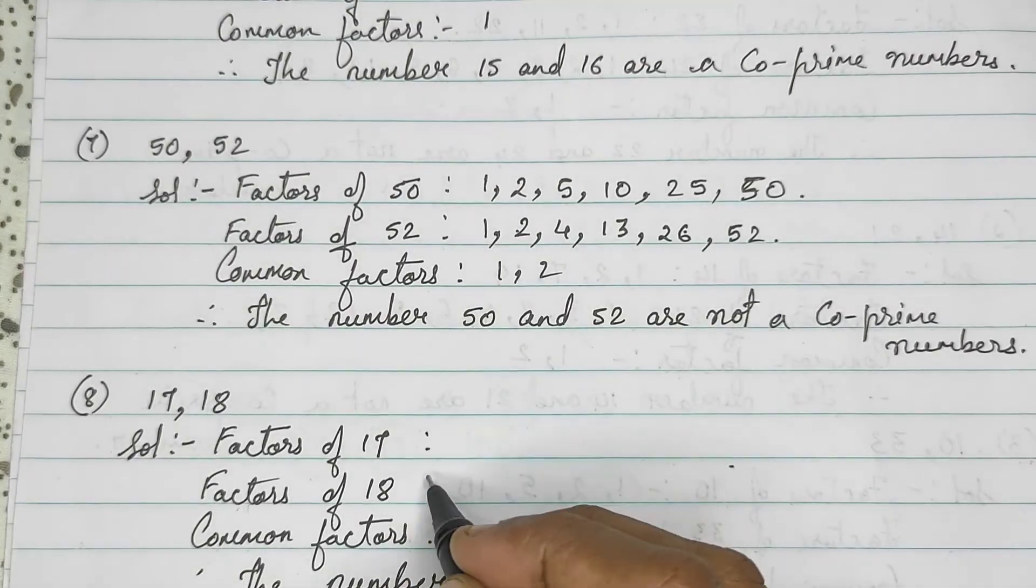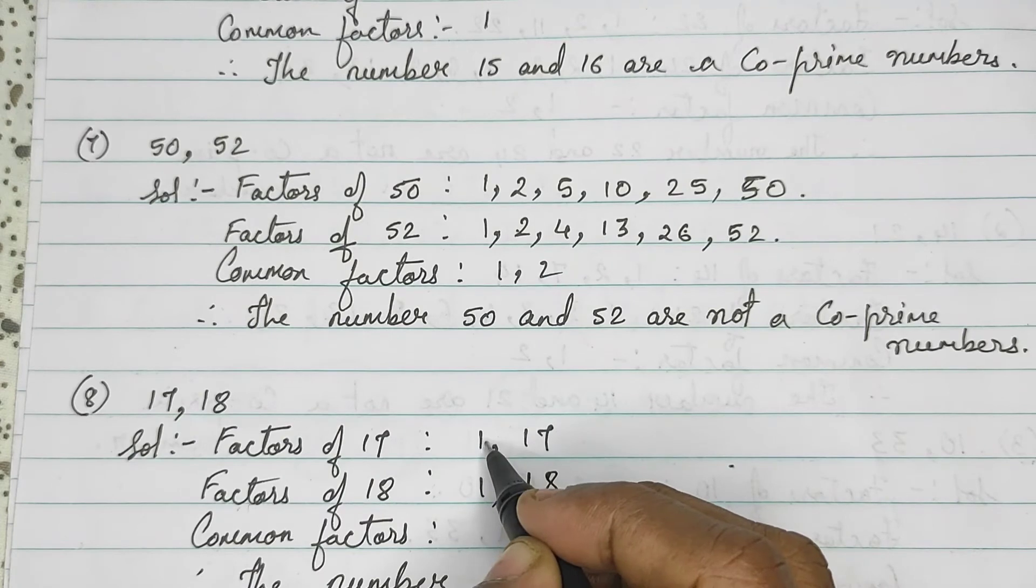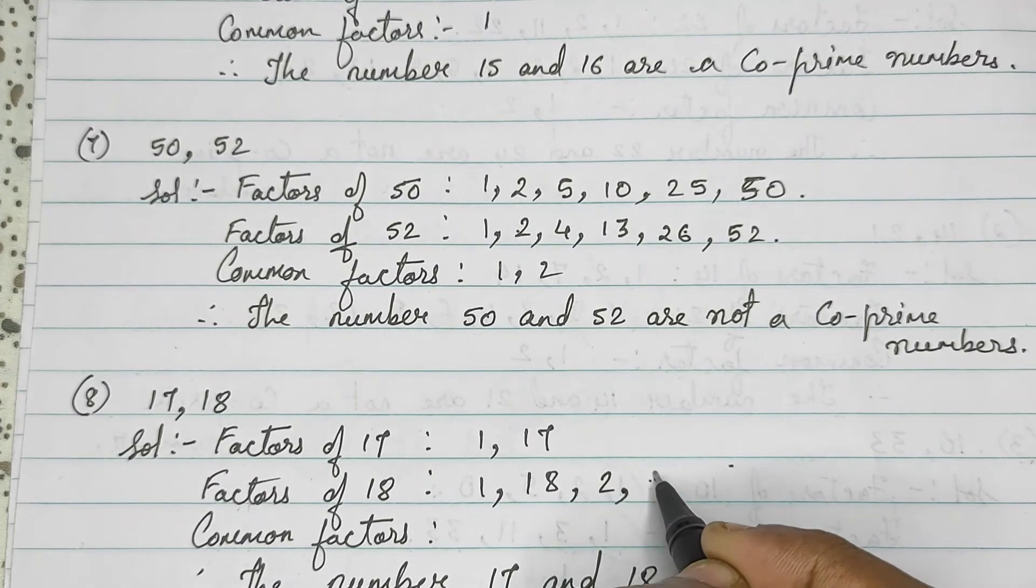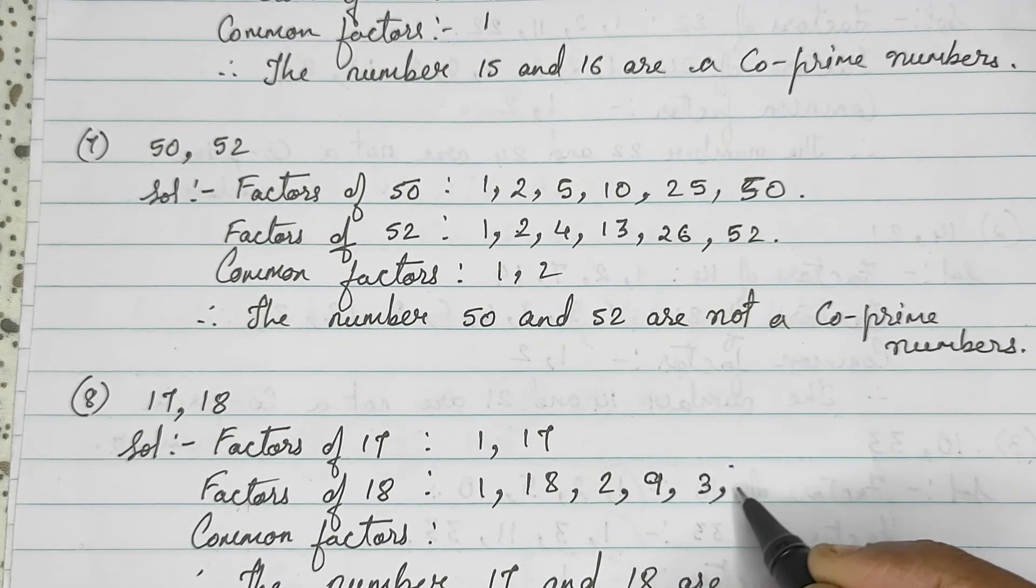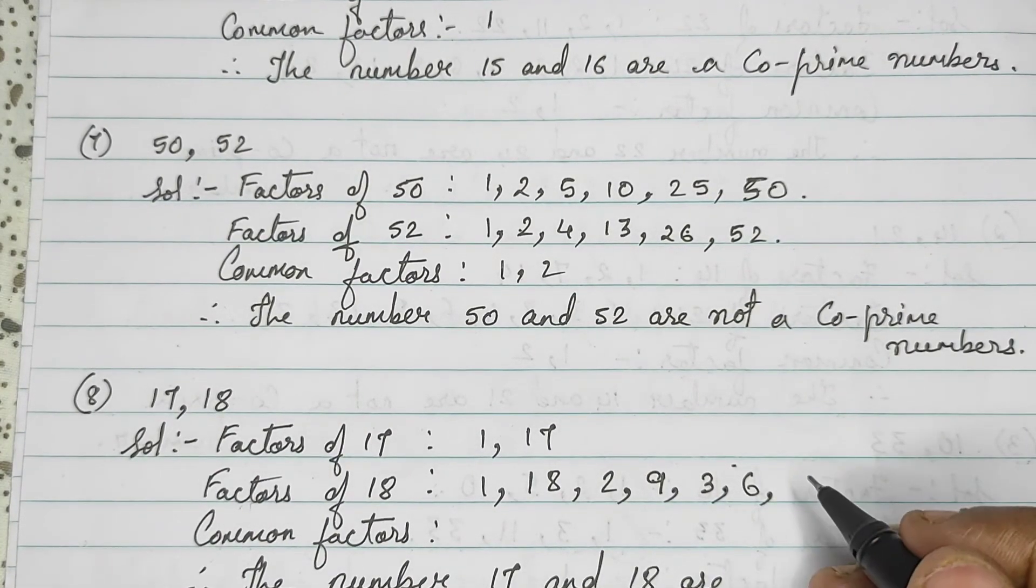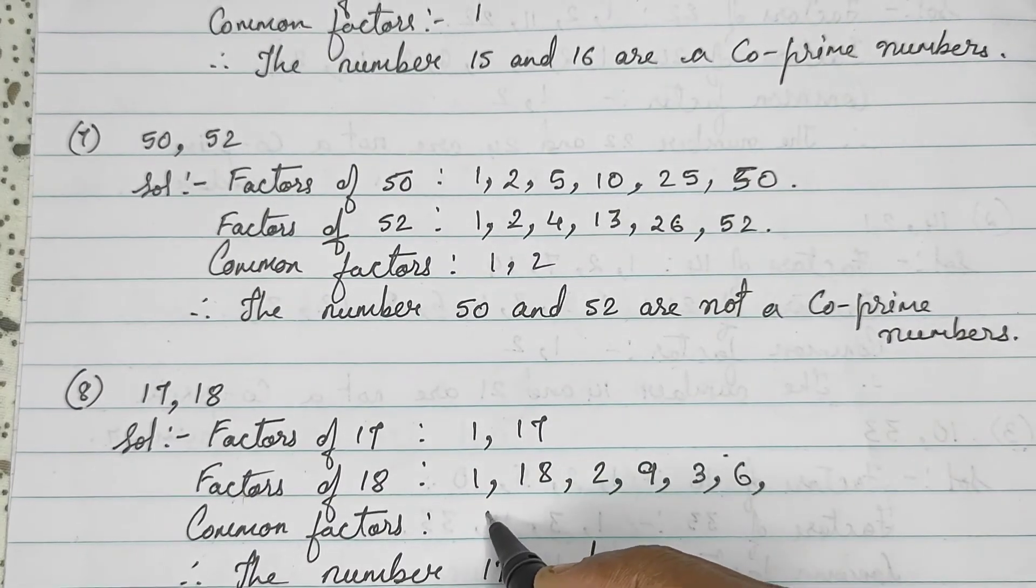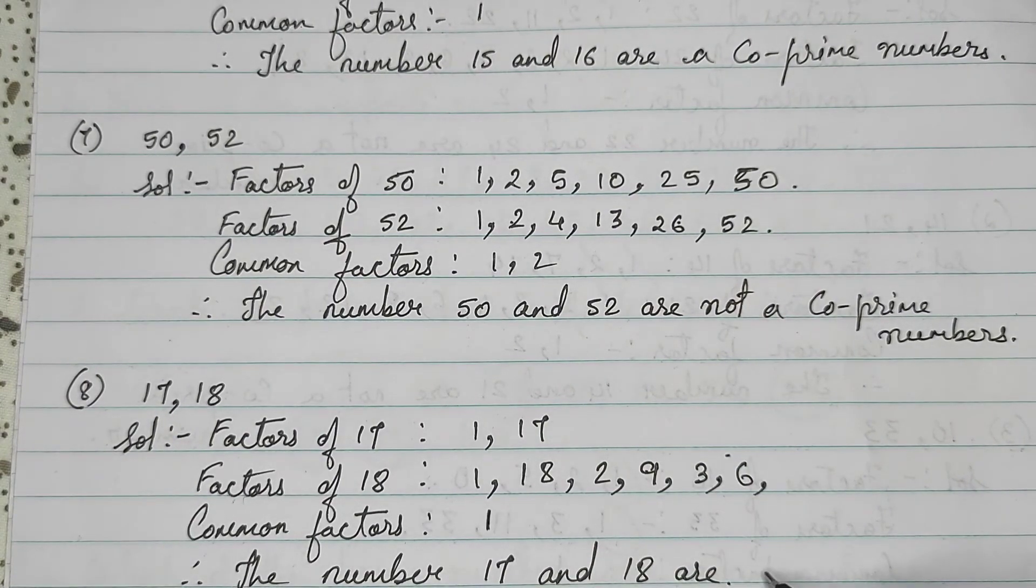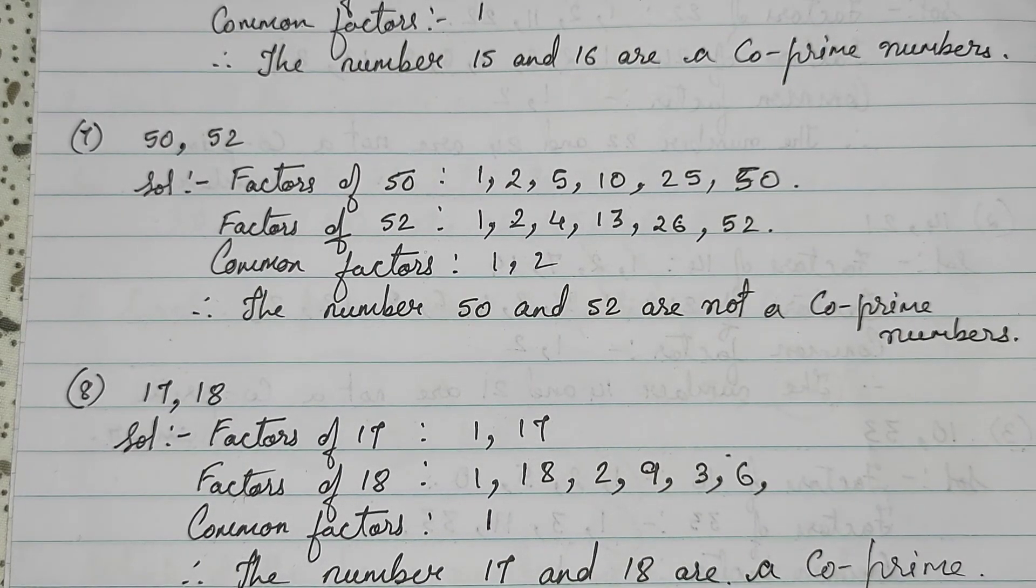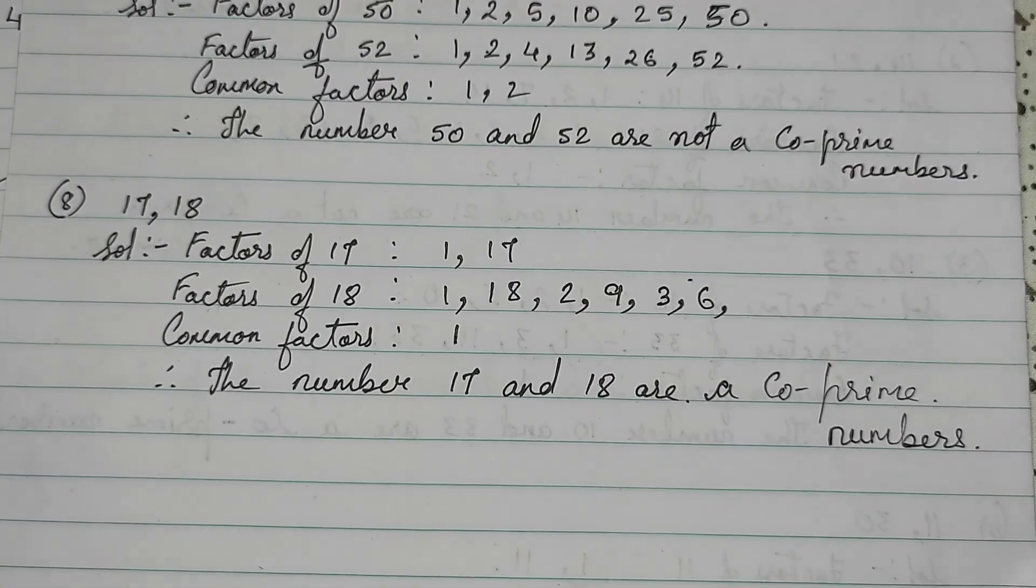17 and 18, both are back-to-back numbers. Obviously, there will be no common multiples. It is divisible by 1 and 17, and 18 is divisible by 1, 2, 3, 6, 9 and 18. So, the common factor is only 1. So, the numbers 17 and 18 are a co-prime number. So, it is said to be a co-prime number.